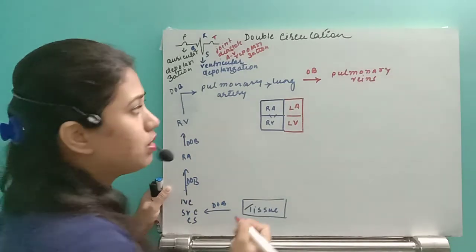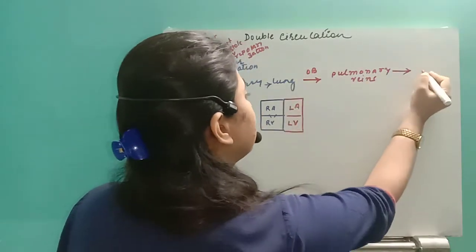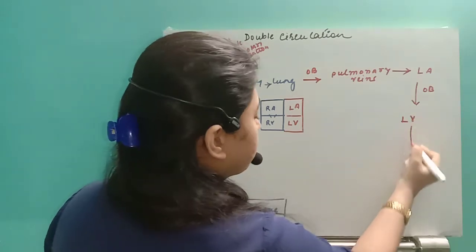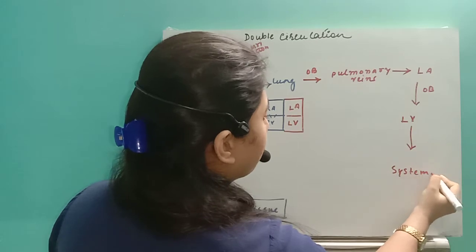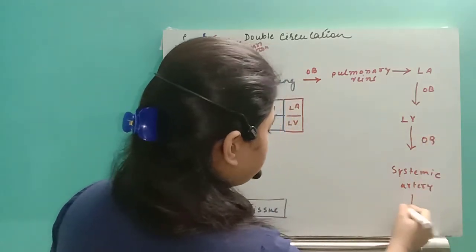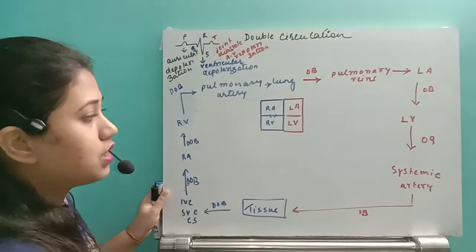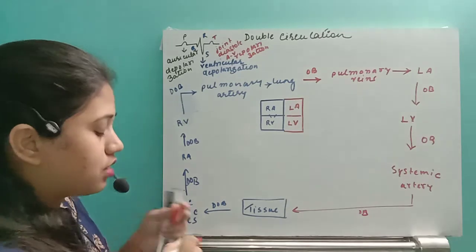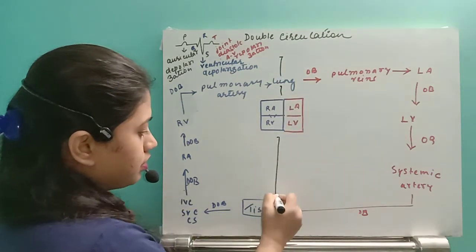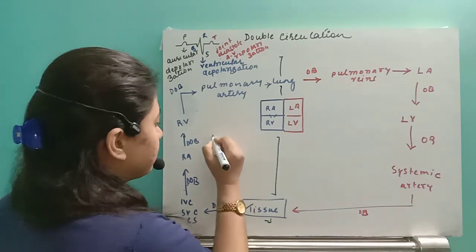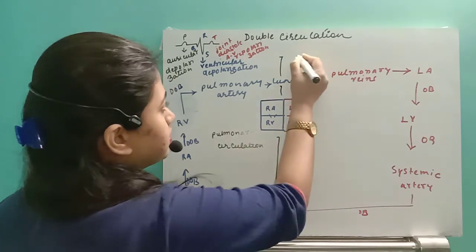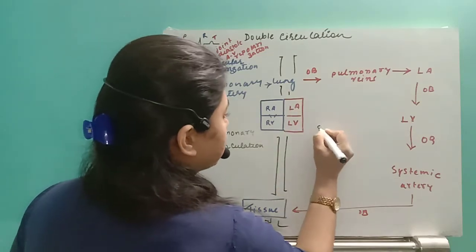Via the pulmonary veins, the oxygenated blood from the lungs is carried to the left atrium. From the left atrium, the oxygenated blood goes to the left ventricle. From the left ventricle, it goes by opening the semilunar valves to the systemic artery. The systemic artery carries oxygenated blood to the tissues, completing the circulation. This part is known as pulmonary circulation and this part is known as systemic circulation.